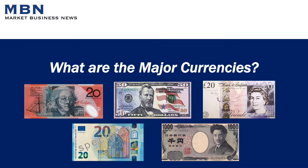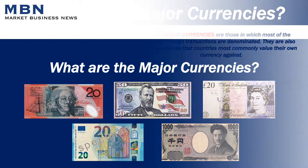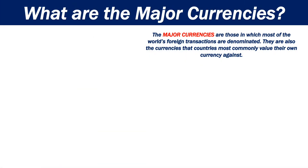What are the major currencies? The major currencies are those in which most of the world's foreign transactions are denominated. They are also the currencies that countries most commonly value their own currency against.